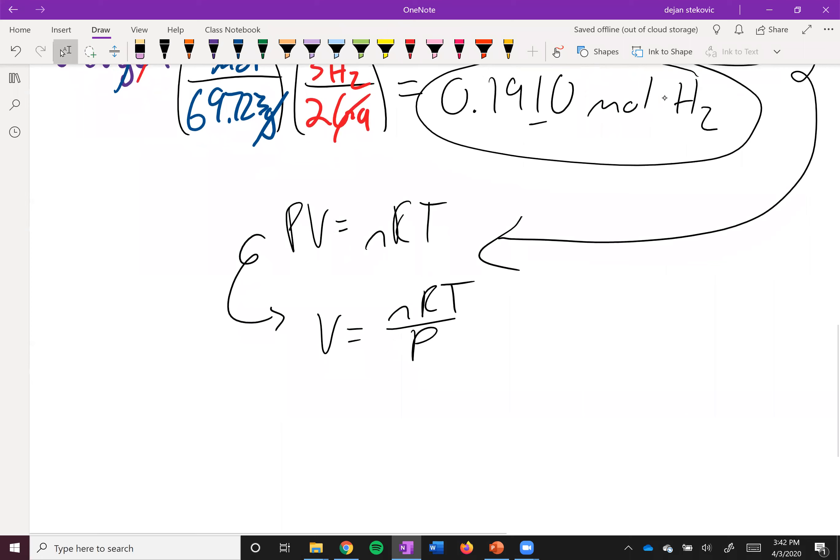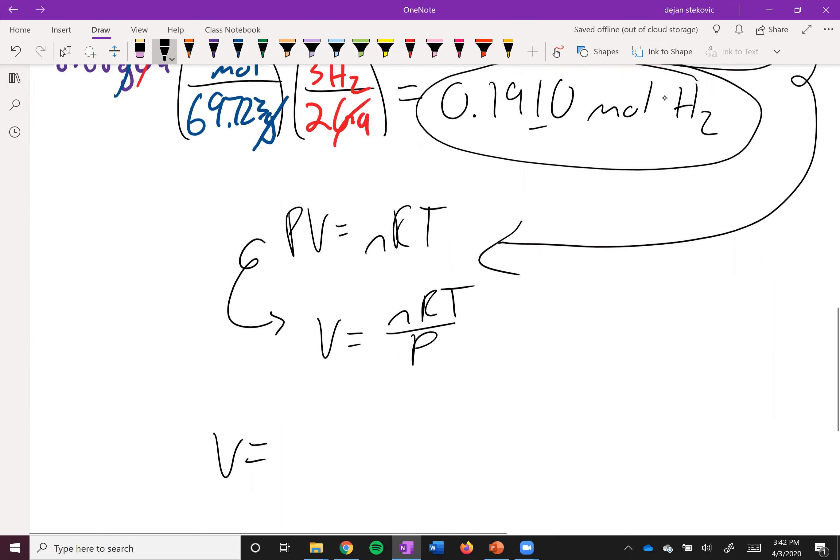So your moles here, that's from your H2. So 0.1910 moles there. R upcoming next is the gas constant, 0.08206 liters, atmospheres, moles, Kelvin.